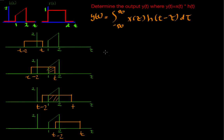Hello everyone. Here we have a convolution problem and we are asked to find y(t), which is the convolution between x(t) and h(t). As we can see, x(t) is easier to shift in this case.